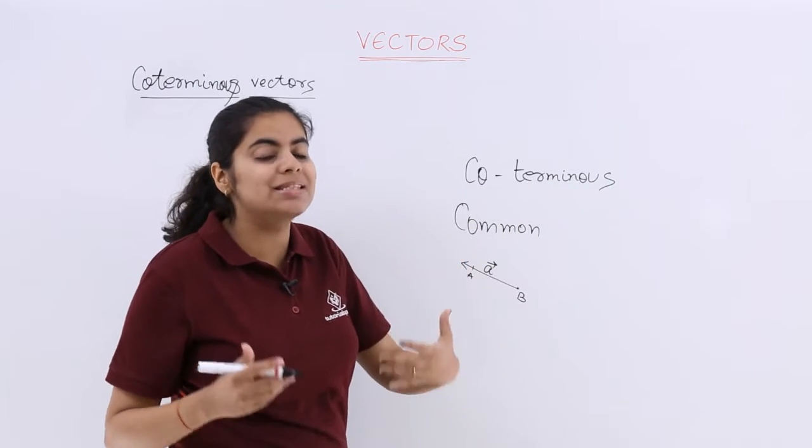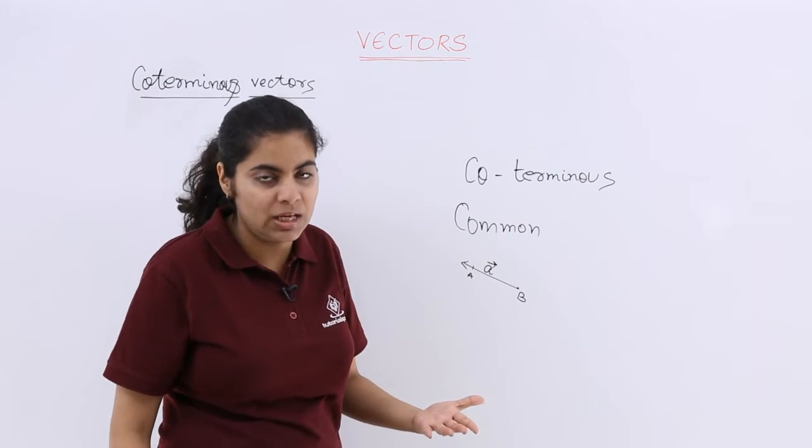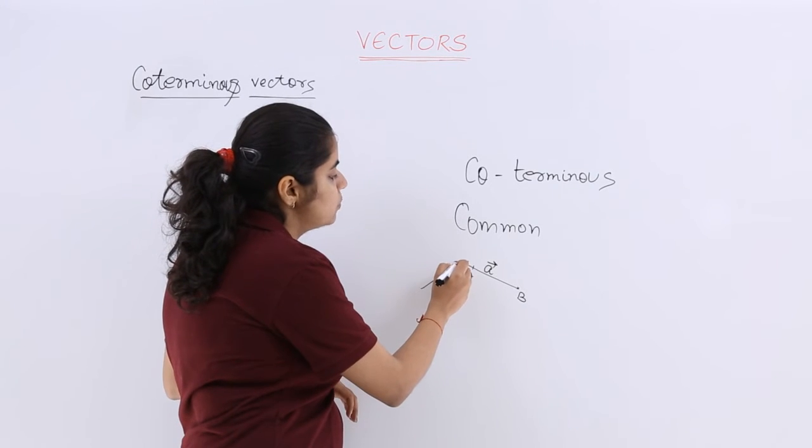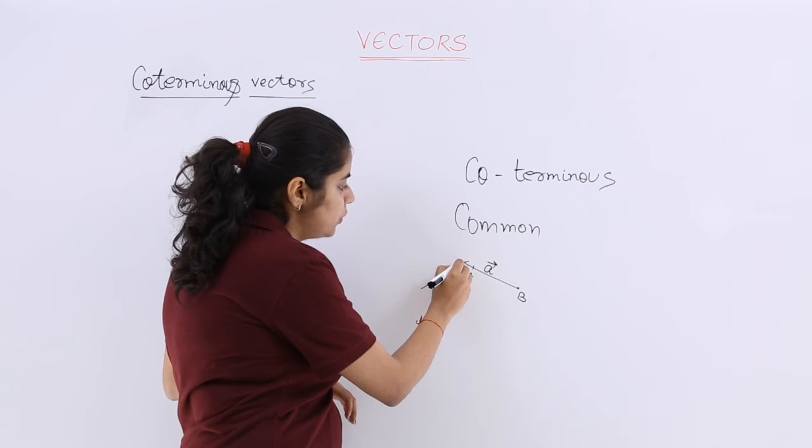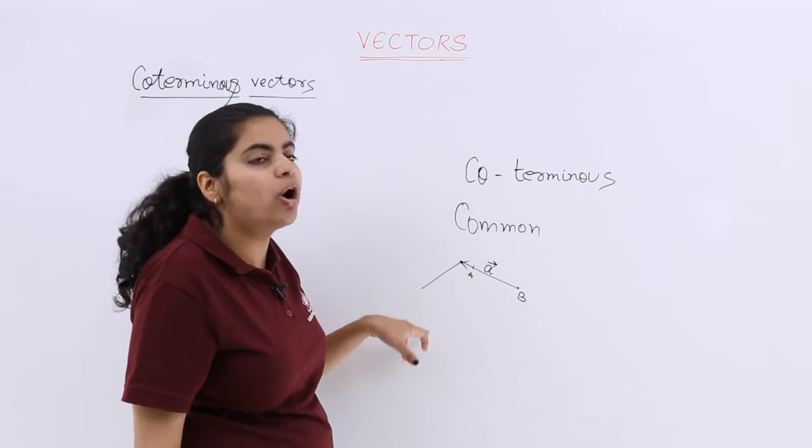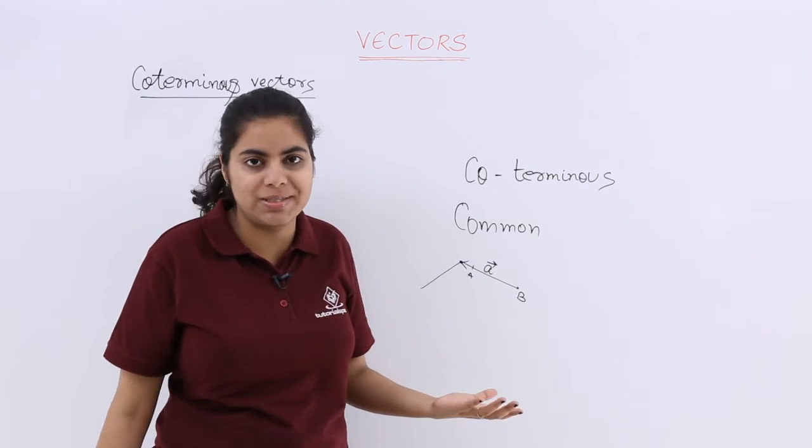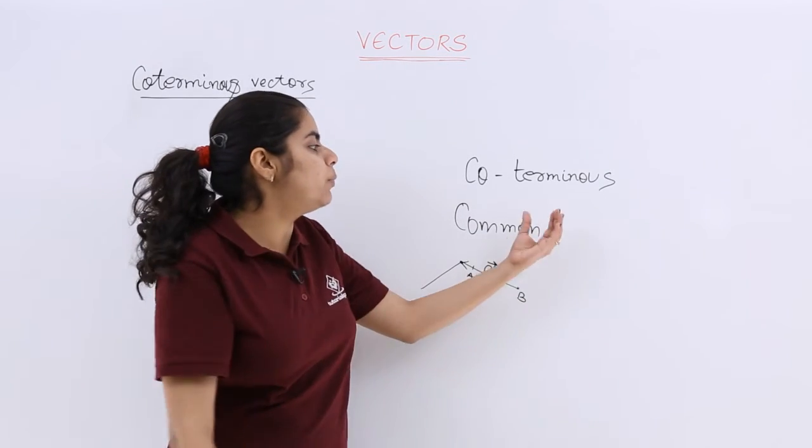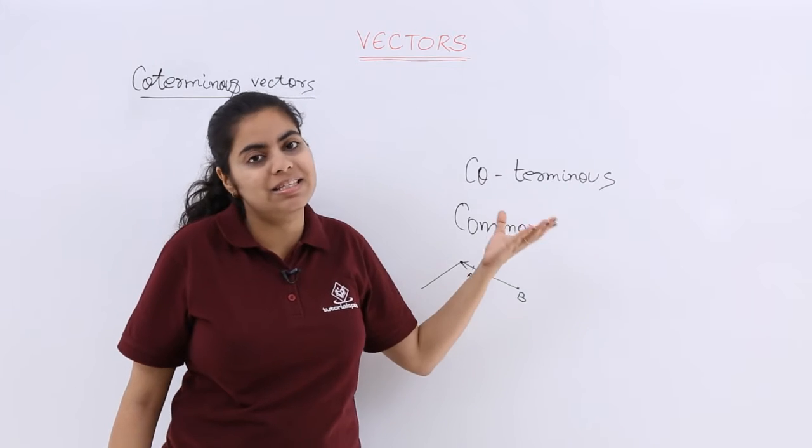Coterminous means the terminal point should be same. Earlier there was co-initial; this time it is coterminous. So the terminal point should be same—means from here this point should be common to another vector. You can draw a vector yourself. So that is the relevance of coterminous vectors: that the terminal point or the final point is same.